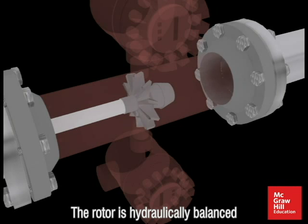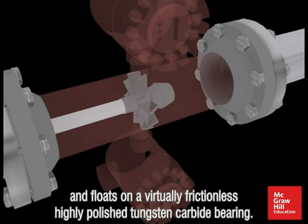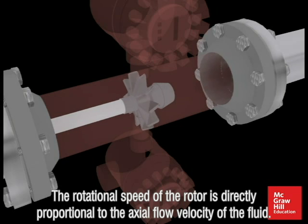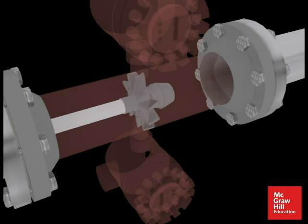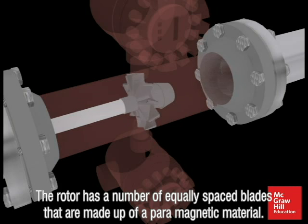The rotor is hydraulically balanced and floats on a virtually frictionless, highly polished tungsten carbide bearing. The rotational speed of the rotor is directly proportional to the axial flow velocity of the fluid. The rotor has a number of equally spaced blades that are made up of a paramagnetic material.